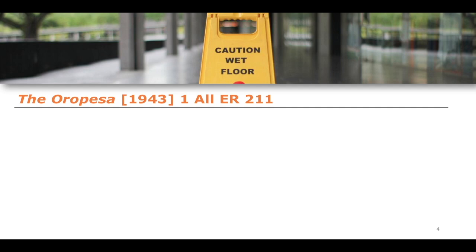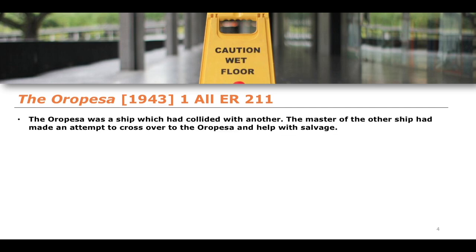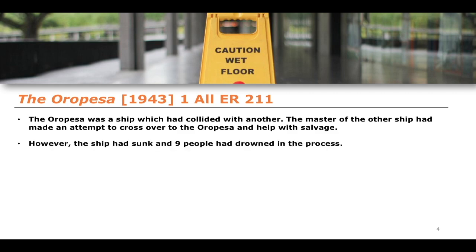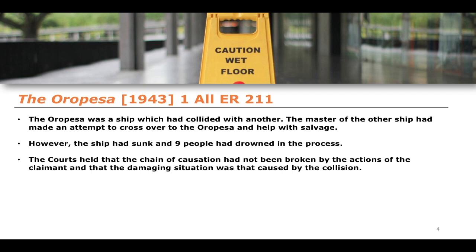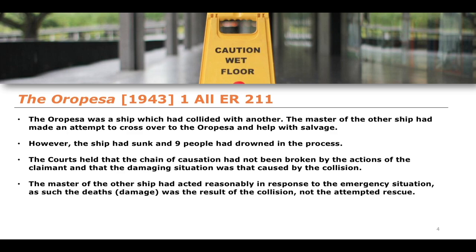An example of this is the case of The Oropisa from 1943. This was a ship which had collided with another ship. The master of the original ship had made an attempt to cross over to the Oropisa to try and help with salvage. However, the ship had sunk and nine people drowned in the process. The court held that the chain of causation had not been broken by the actions of the claimant, and that the damaging situation was caused by the collision. The master had acted reasonably in response to the emergency situation, and as such the deaths were a result of the collision, not the attempted rescue. So this represented an alleged new intervening cause that turned out not to be one.